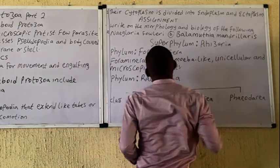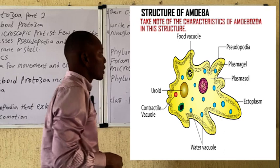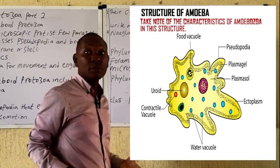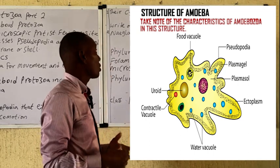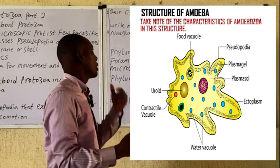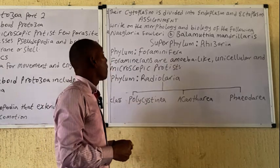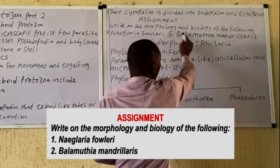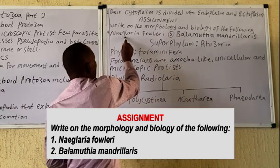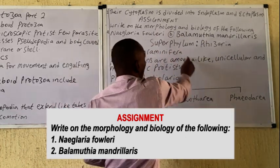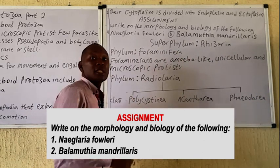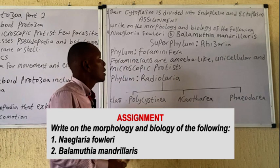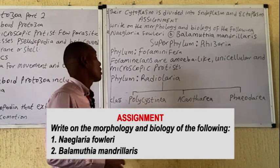Their cytoplasm or protoplasm is divided into two parts: the endoplasm and the ectoplasm. Some of the organisms in this category include the popular amoeba. As an assignment, please write on the morphology and biology of Naegleria fowleri as well as the characteristics of the group Amoebozoa.